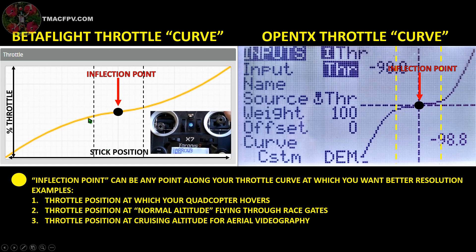Now we're going to look at how we can actually implement that better throttle control around this inflection point along your throttle curve in both Betaflight and also in your transmitter which runs OpenTX firmware. For our demonstration purposes our inflection point is going to be the throttle position at which the quadcopter hovers. However, the same process applies for any point you wish, such as your throttle position at normal altitude when flying through race gates or your throttle position at cruising altitude for aerial videography.